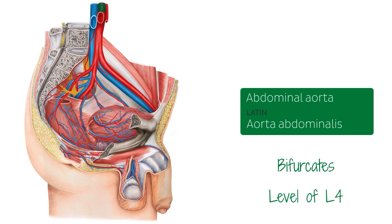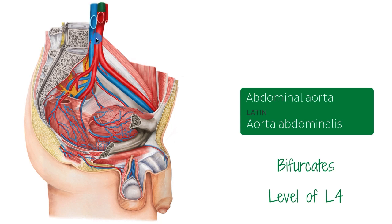So this is where it's going to be bifurcating. You can also see here on this image — we removed L4, but this is where L4 should be — and this is where the bifurcation of the abdominal aorta is going to be happening. When it bifurcates, it will then split into the left common iliac artery and the right common iliac artery at approximately this level. And on this image, you can see here the left common iliac artery and a cut of the right one here.